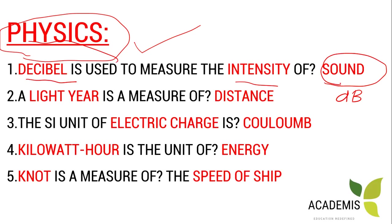The unit decibel is named after Alexander Graham Bell, who invented the telephone. So the unit 'bell' gives us 'decibel'. Decibel is the unit used to measure sound intensity. So in summary, decibel is the unit for measuring the intensity of sound.